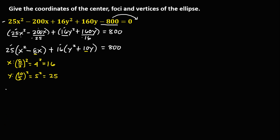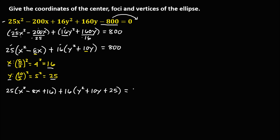Write the new equation: 25 times (x² minus 8x plus 16), plus 16 times (y² plus 10y plus 25), equals positive 800. Take note that whatever number is added on the left side must also be added on the right side. Since we added 16 for x but we have the coefficient 25 outside, we need to multiply these two numbers and add to the right side.